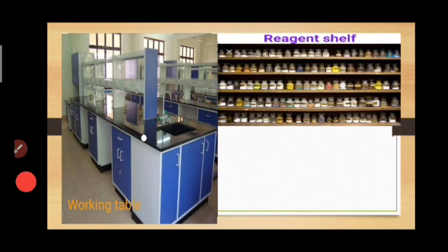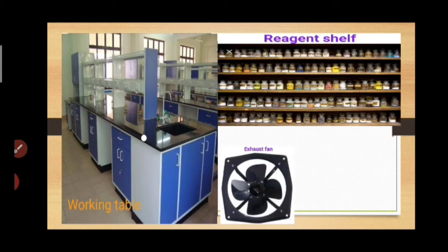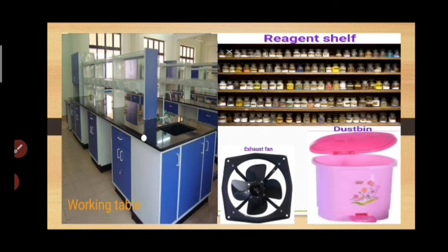A chemistry lab also has a reagent shelf where all the chemicals are arranged properly. It should have an exhaust fan to remove the smell of chemicals and poisonous gases. Most importantly, it should have a dustbin to dispose of all useless products.